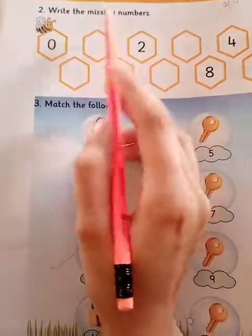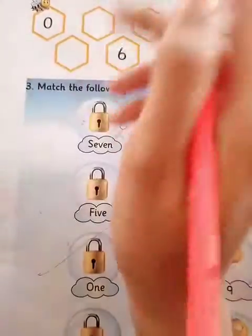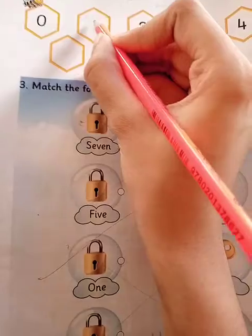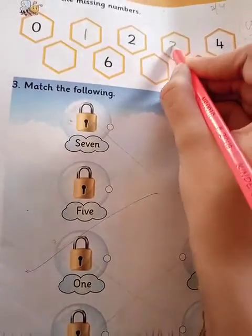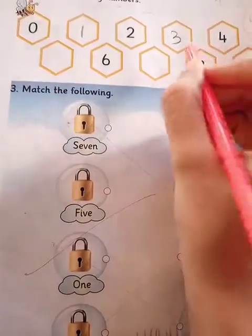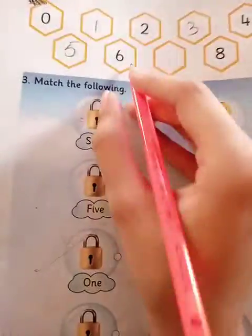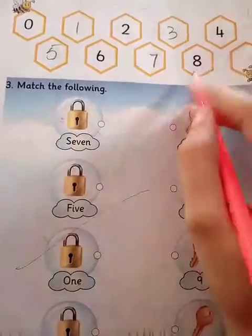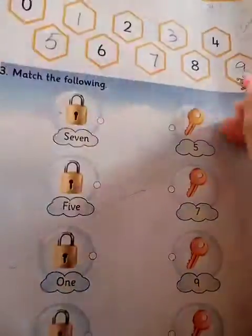Now come towards page number two — write the missing numbers. We have to write the missing numbers. The missing numbers are: 0, 1, 2, 3, 4, 5, 6, 7, 8, 9. Okay?